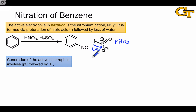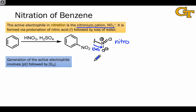The active electrophile in nitration reactions actually resembles the nitro group without the bond to the aromatic π system. It's the so-called nitronium cation, NO2+.